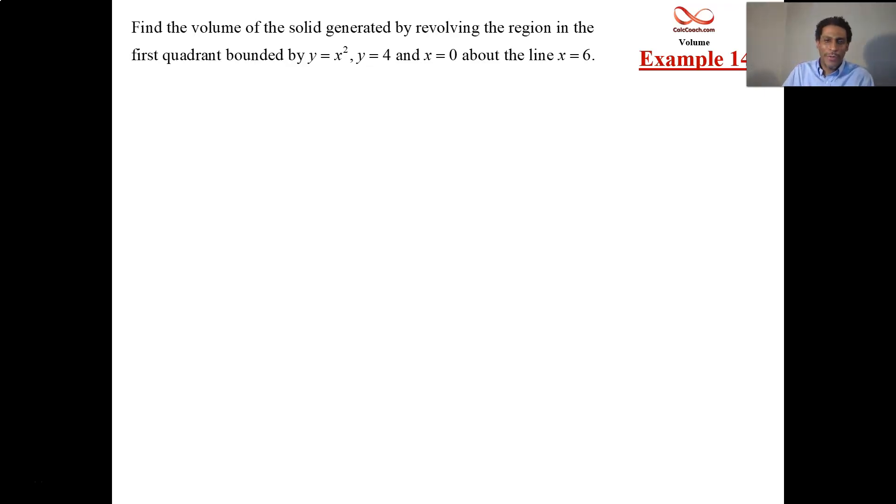Hello, welcome to this video where we go through two more examples of shell method and hopefully through this you can get the method down. In this question we're asked to find the volume of the solid that's generated by revolving the region in the first quadrant bounded by the parabola y equals x squared, the line y equals 4, and the line x equals 0.